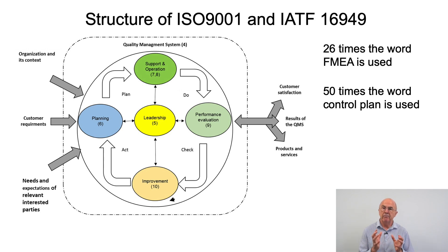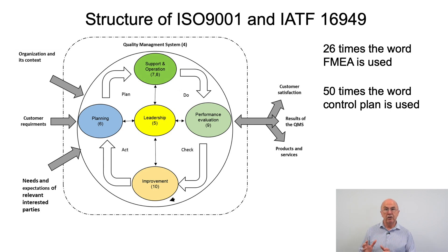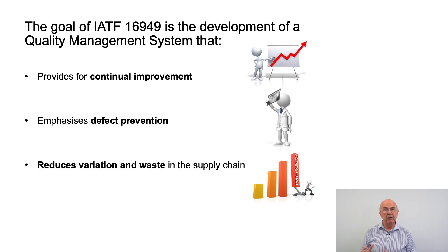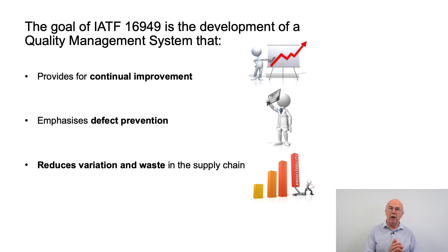Many of you will be aware that the FMEA should link to the control plan. In IATF 16949, we see the word control plan used 50 times. The International Automotive Task Force have developed IATF 16949 with the goal of providing for continual improvement, emphasising defect prevention and the reduction in variation and waste in the supply chain.